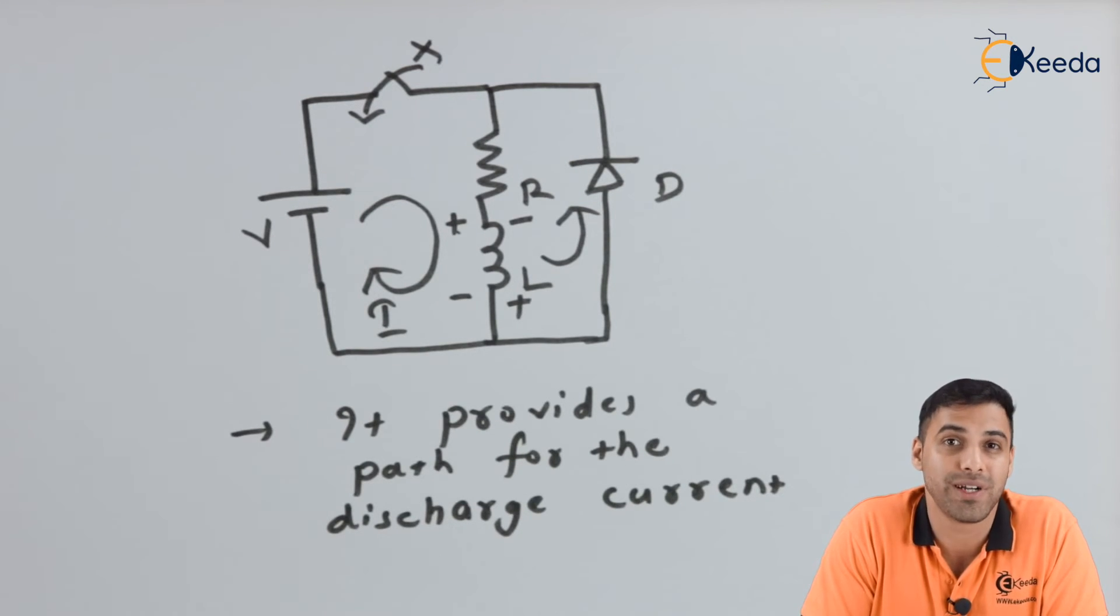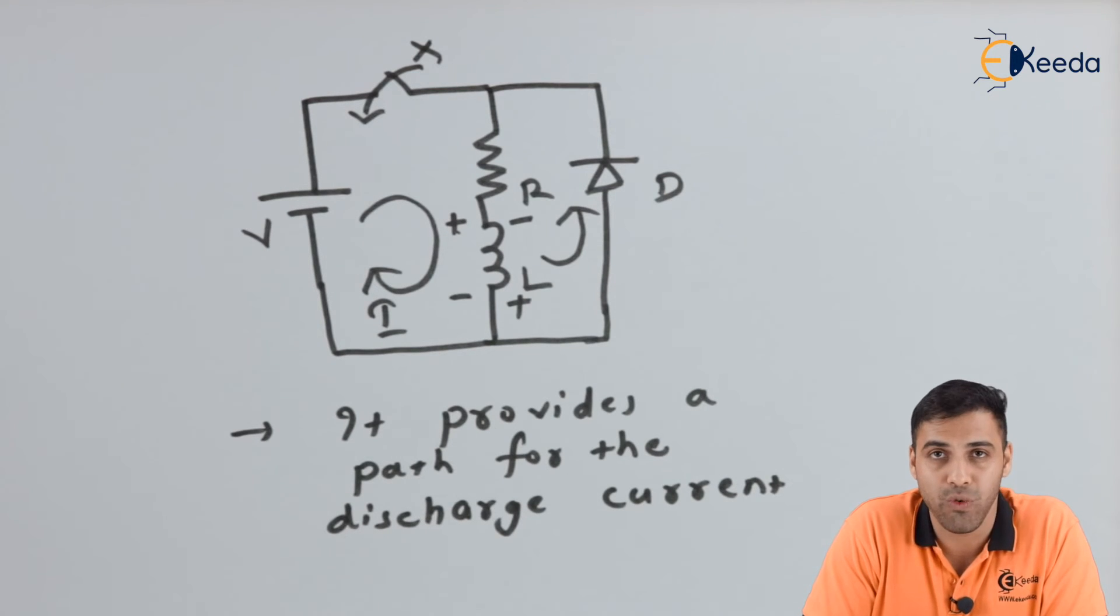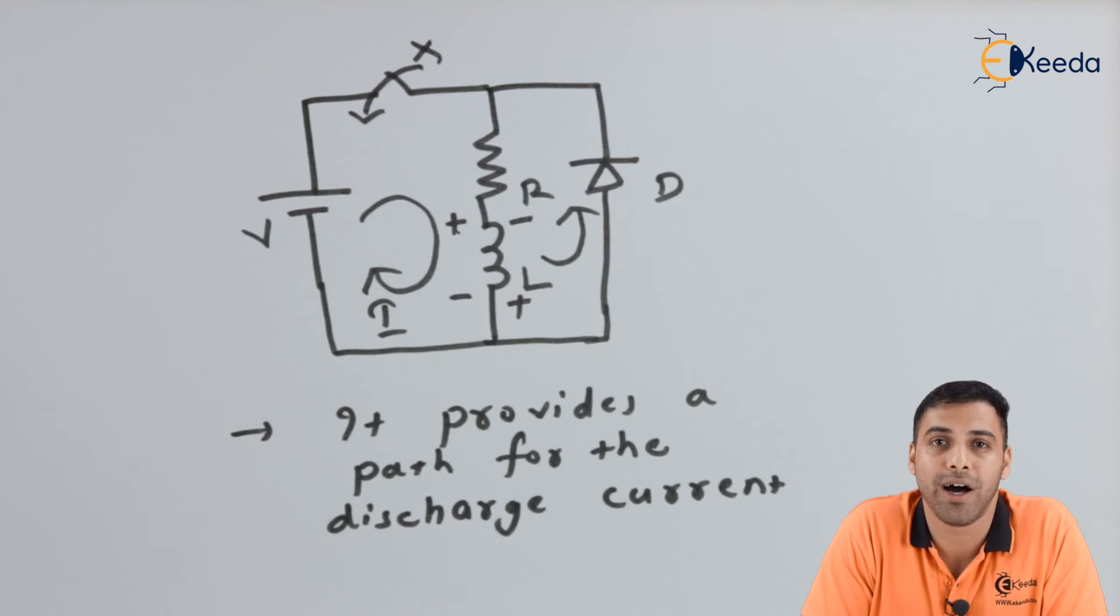Because it provides a path for the discharge which is highly beneficial for the circuit. Because if we do not provide a discharging path for the inductor or a capacitor, the circuit might get destroyed because of overcurrent or because of extra harmonics.